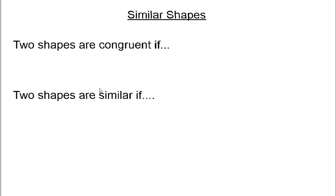Two new words for you here: we've got the word congruent and we've got the word similar. You've probably never used similar before, and I doubt if you've used the word congruent before. Congruent comes from, I think, an old Latin or Greek word 'congrue', which means to agree with. In maths, two shapes are congruent if they are exactly the same shape and size.